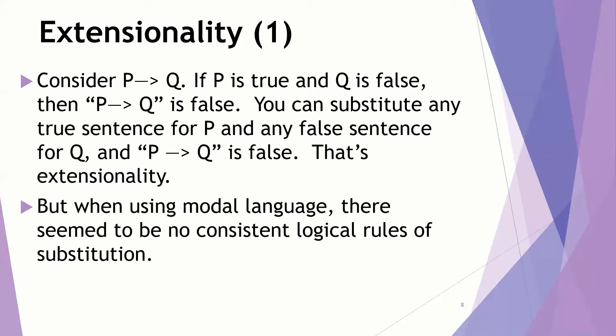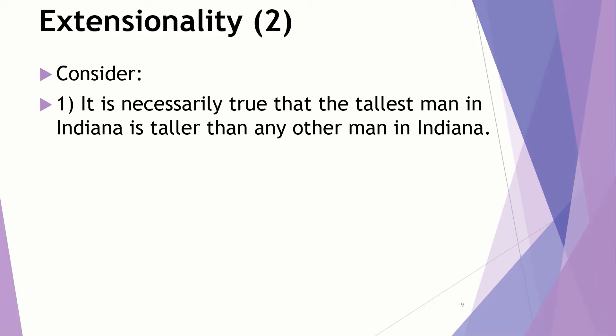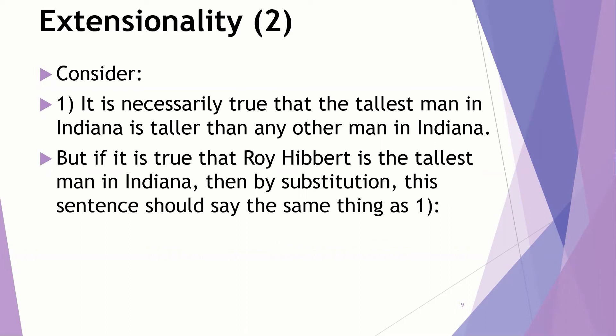Let's consider some examples here of why this seems to be problematic. It is necessarily true that the tallest man in Indiana is taller than any other man in Indiana. That's a necessary truth. This is the kind of thing that modal metaphysicians, metaphysicians who take modality seriously would want to say. That seems reasonable.